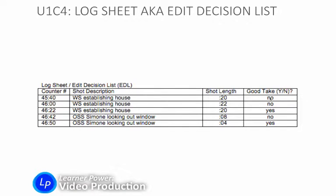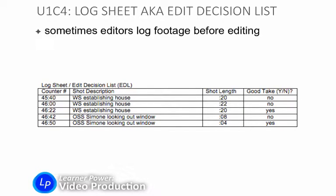The first establishing shot was no good, the second establishing shot was no good, but the third establishing shot was good. These logs are often kept in the field, or they might be done later after a day of shooting, in order to have a nice list of where the good takes are on our recordings at the end of the day.